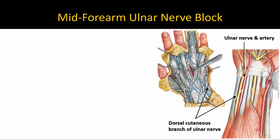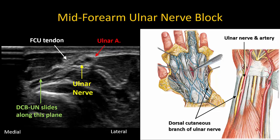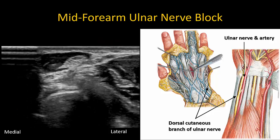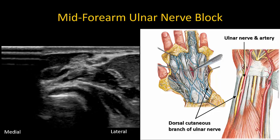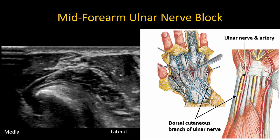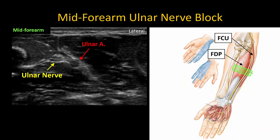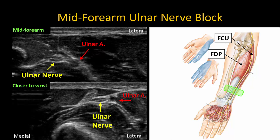The dorsal cutaneous branch runs under flexor carpi ulnaris tendon and winds around the bony ulna to innervate the dorsum of the medial hand and the fourth and fifth digits. On this dynamic back-and-forth ultrasound scan, the dorsal branch can be seen separating from the ulnar nerve on ultrasound close to the proximal wrist crease. A more distal injection site may be chosen if complete motor sparing of flexor carpi ulnaris and digitorum profundus is desired.